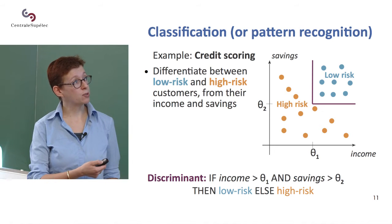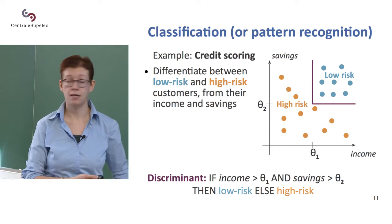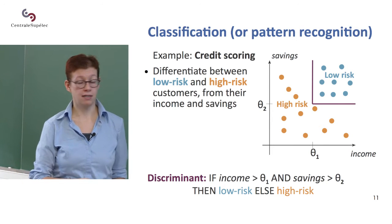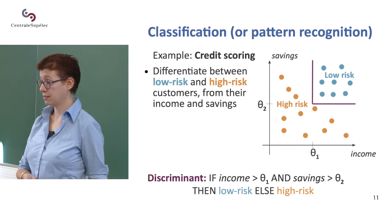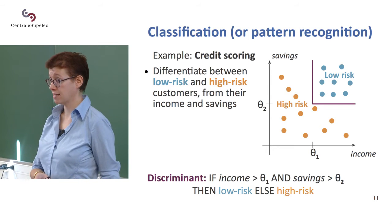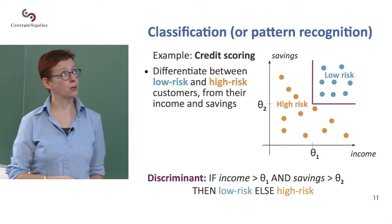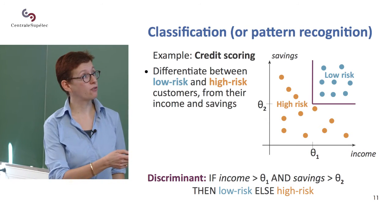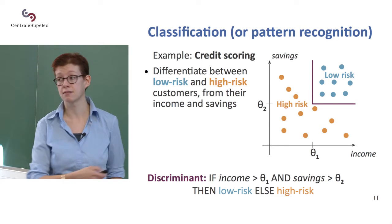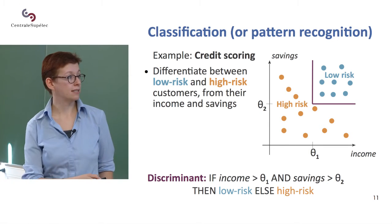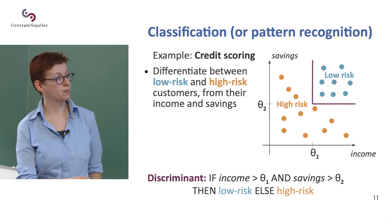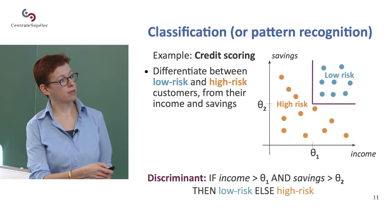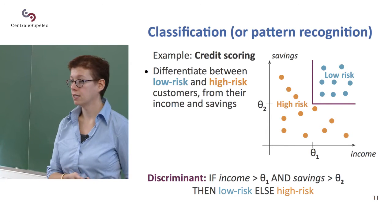So you have two classes: low risk and high risk, depending on income and savings. You want to learn a function that separates those two classes. Classification is also called discriminant analysis because this separating function — defined here as income being greater than a given threshold and savings being greater than another threshold — is called a discriminant.